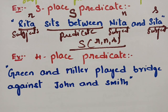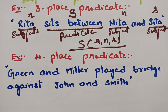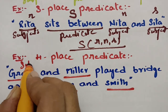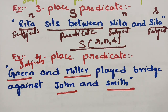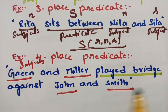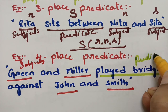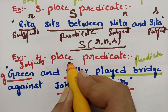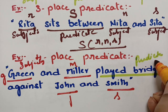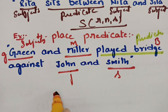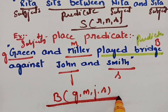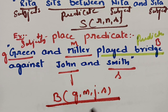For a four-place predicate: 'Green and Miller played the bridge game against John and Smith.' The four names — Green, Miller, John, Smith — are all subjects (small g, m, j, s). 'Played bridge game' is the predicate (capital B). This is a four-place predicate, symbolized as B(g, m, j, s).